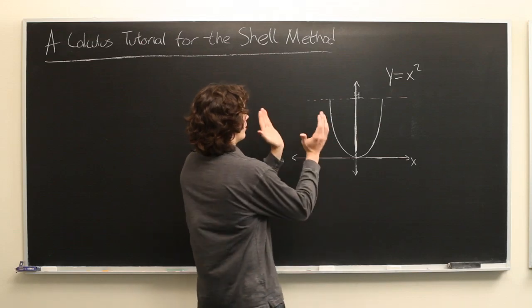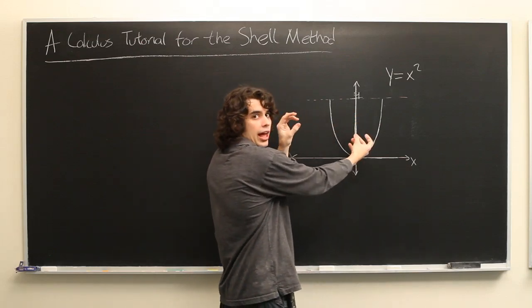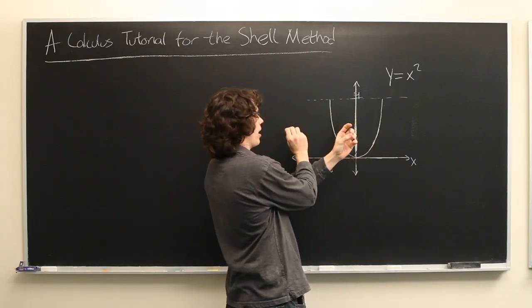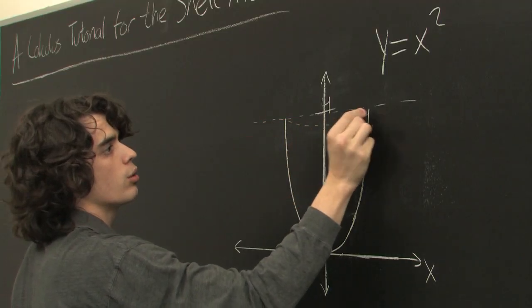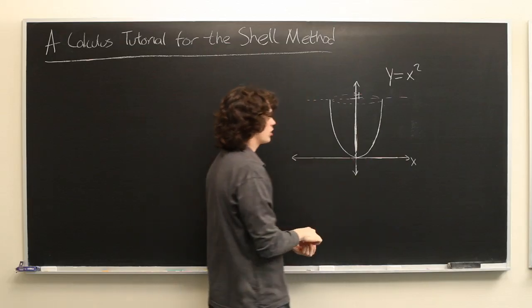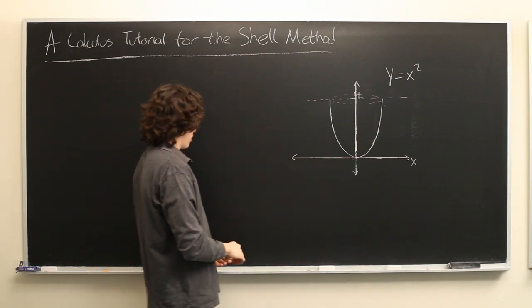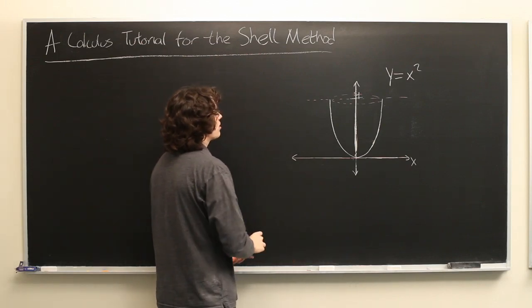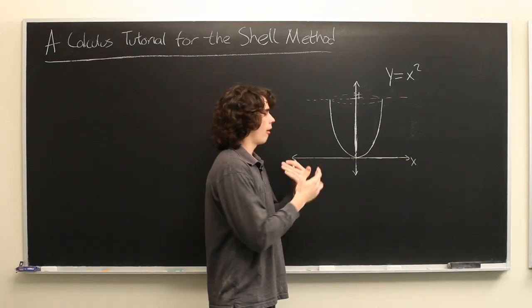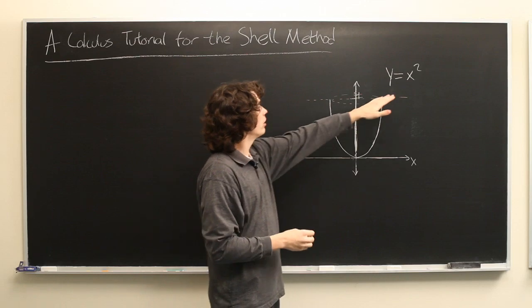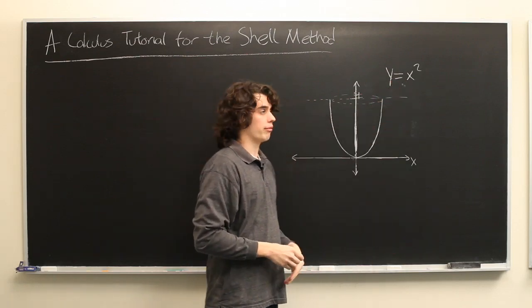We're going to take that parabola and revolve it around the y-axis, so it forms something that looks somewhat like a cup. What we want is some method for calculating the total volume of that object based only on the definition of the original function.